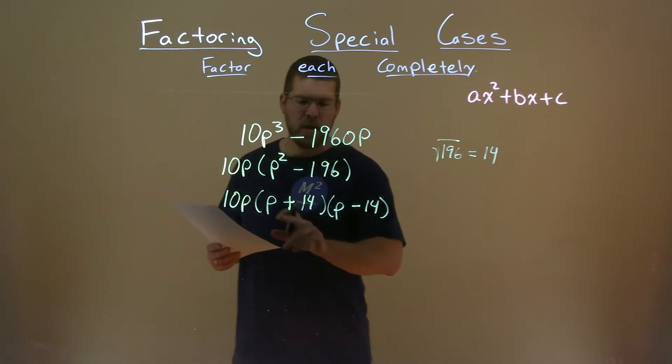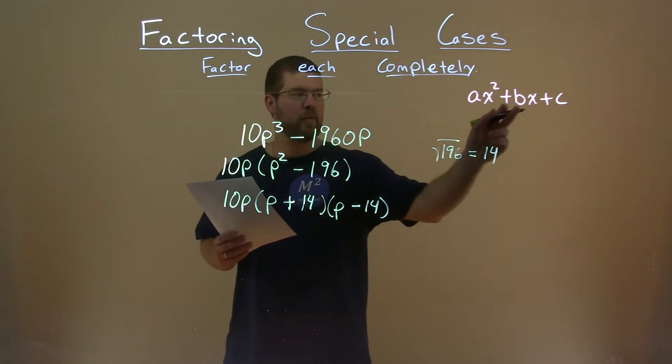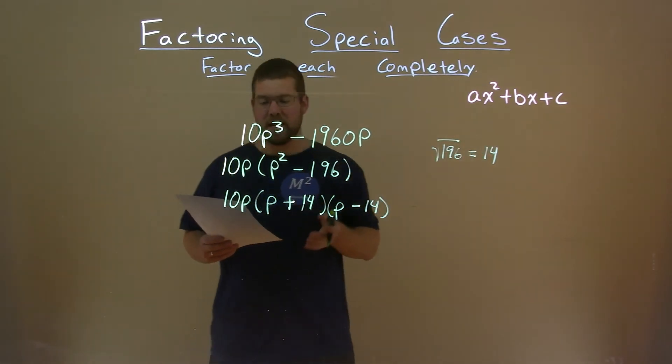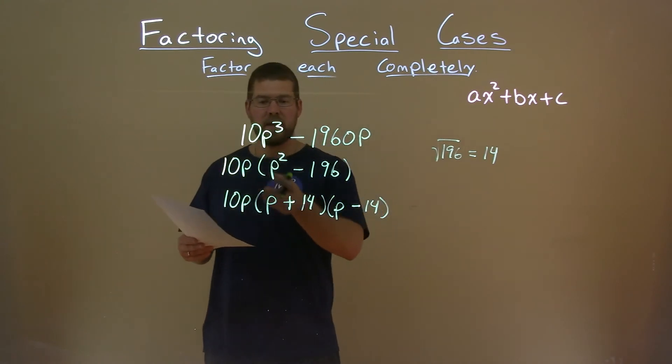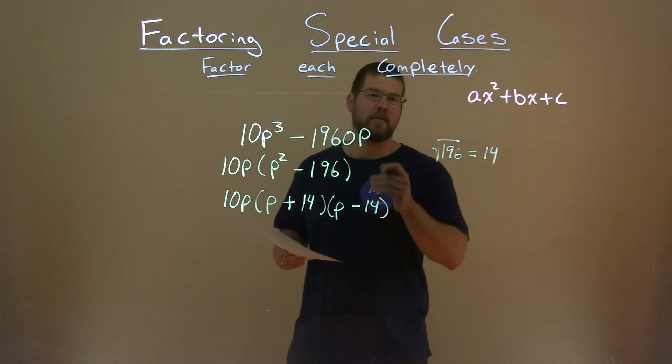But watch this: p times the negative 14 plus 14 times p gives me 0, which is what I need there, a 0b value. So now we actually have our final answer here, 10p times p plus 14 times p minus 14.